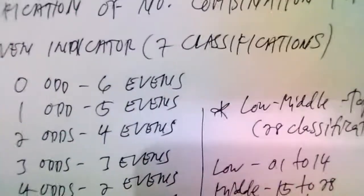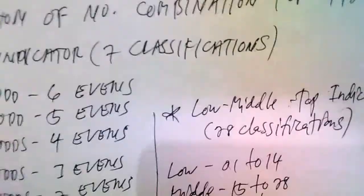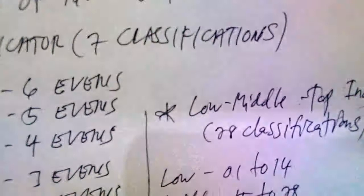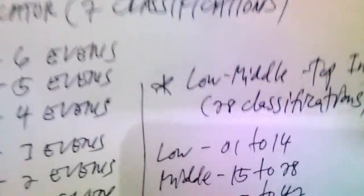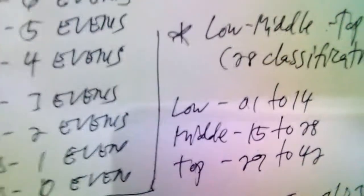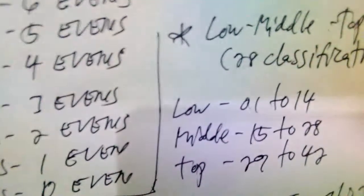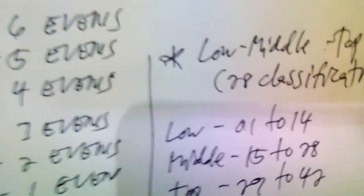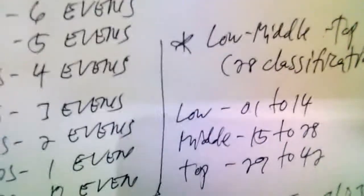Under the Low-Middle-Top (LMT) indicator, I have identified 28 classifications of number combinations for 6/42. Low numbers refer to numbers 0 through 14, middle numbers are 15 through 28, and top numbers are 29 through 42.